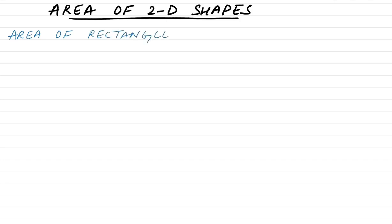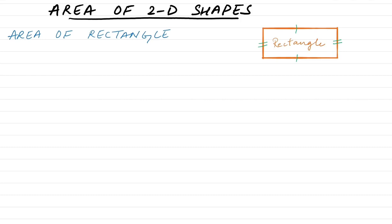How can we find the area of a rectangle? What's the formula? Let's draw a rectangle. We know that two sides of a rectangle are equal and the other two sides are equal. This side is equal to this side, and this side is equal to this side. The bottom is called the base or length of the rectangle, and this side is called the width. The formula to find the area of a rectangle is: area is equal to length times width.